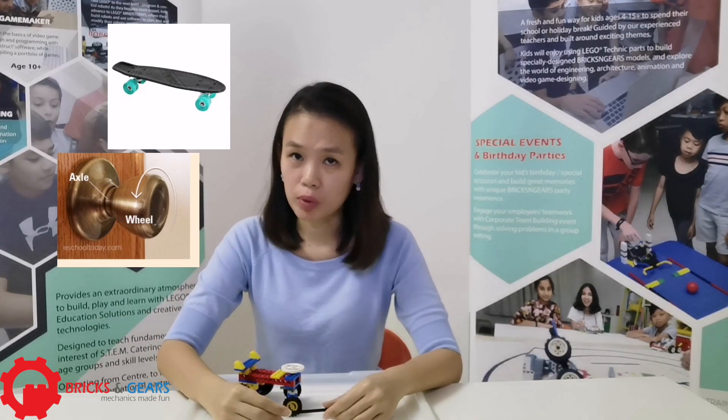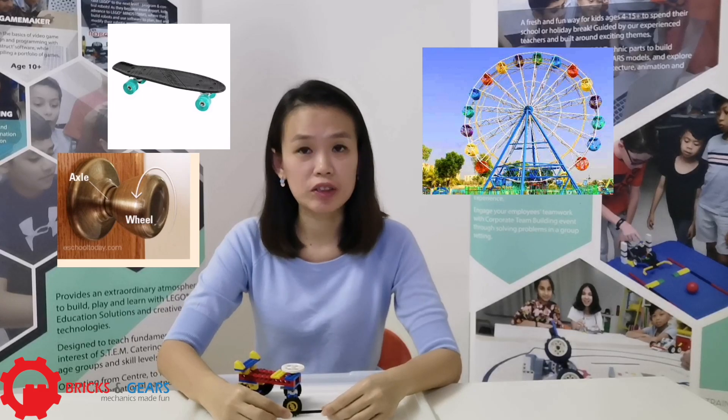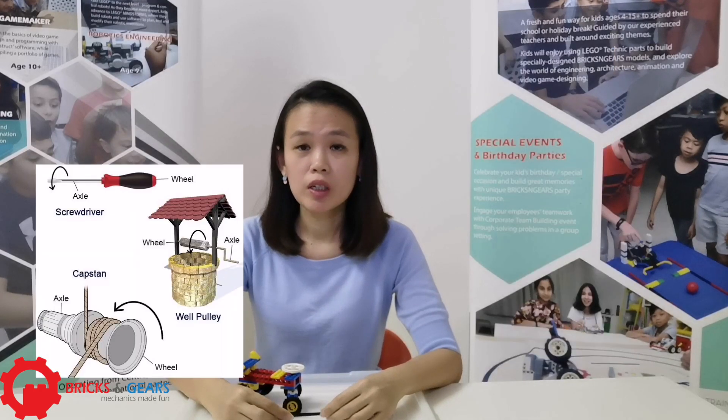Do you know where wheels and axles are found? Besides bicycles, cars, and tires, you can actually find them in a door knob, skateboard, various wheels, electric fan, and many more.